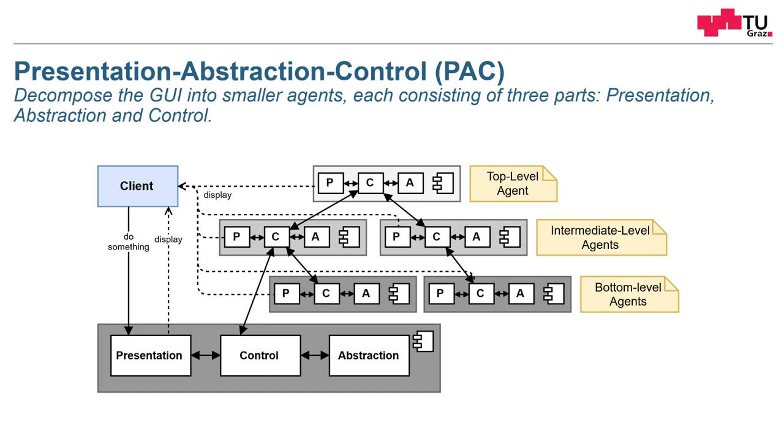In the pattern there's also the differentiation between a top level agent, an intermediate level agent, and bottom level agents. But this is not that important. Important is that the whole structure is composed out of smaller components which all have these three parts.